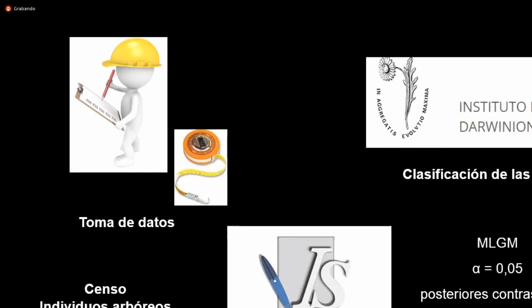Las especies fueron clasificadas en grupos ecológicos según la clasificación de Das Chagas y Dumé. Para el análisis estadístico se usó el software InfoStat versión estudiantil. Como no se cumplían algunos supuestos para el ANOVA tradicional en bloques al azar, se utilizaron los modelos lineales generales y mixtos con un alfa de 0,05 y posteriores contrastes de medias usando el test de LSD de Fisher.